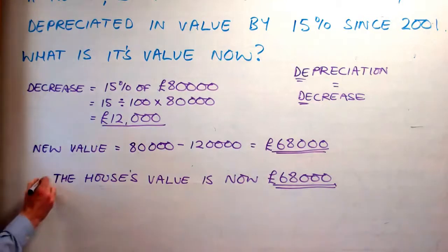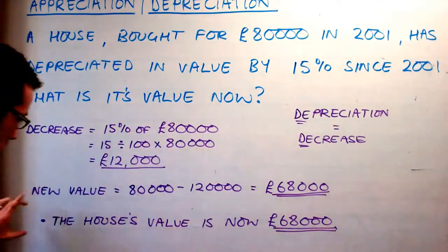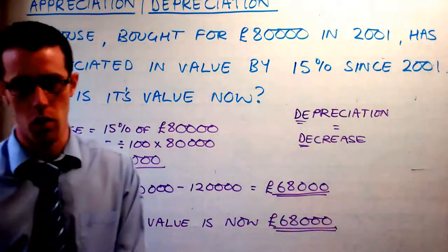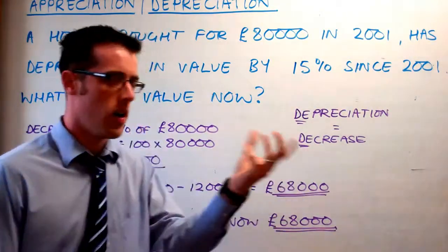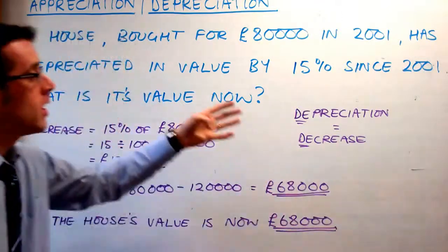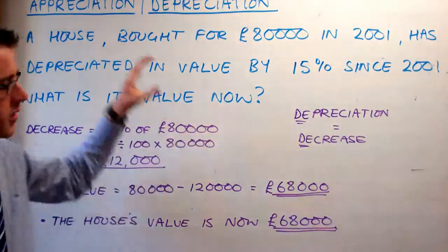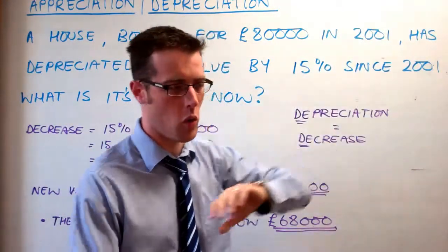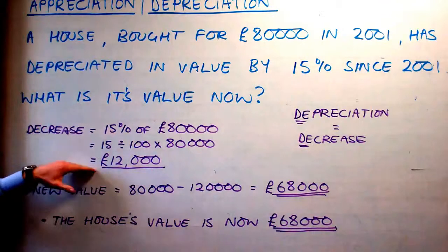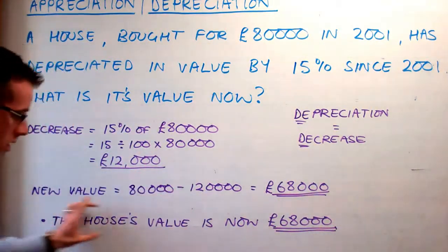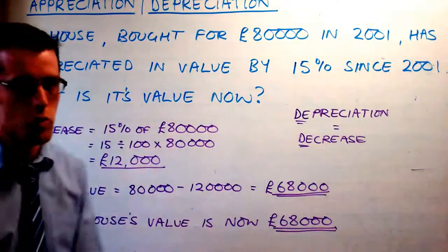By doing that, we've shown we've fully understood the entire question, applied the maths correctly, and given a clear statement demonstrating our understanding. In those two examples, you saw a percentage increase and a percentage decrease. For appreciation and depreciation, the only difference is it happens over time — you're given extra information like 'since 2001' or 'over the course of last year.' You work out the percentage to add on or take away, then leave your answer in a sentence relating to the context. It's quite straightforward.